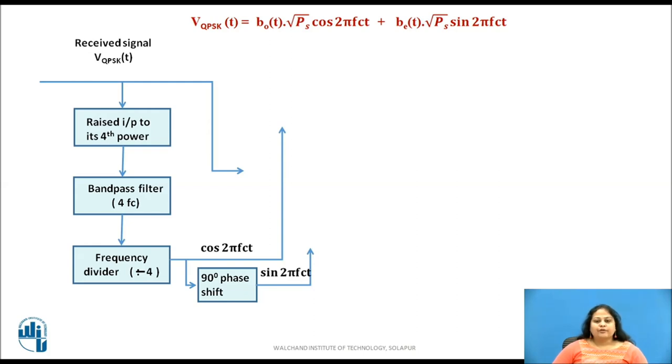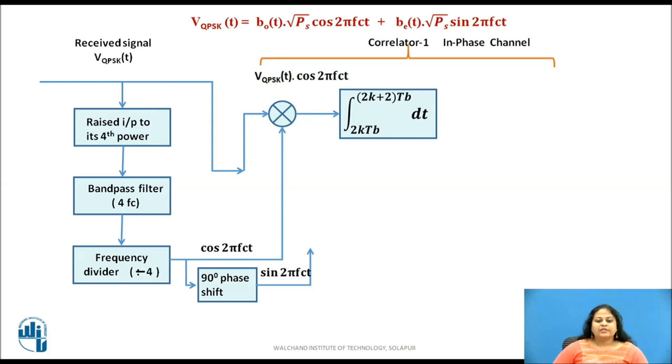We know that the received QPSK signal is the sum of product of pair of quadrature carriers with in phase signal BO of t and quadrature phase signal BE of t as shown. The coherent carrier cos of 2 pi fct and the received QPSK signal are applied to a multiplier of a correlator 1 whose output is integrated in an integrator over 2 bit interval 2 tb which is equal to one symbol duration. This integrator produces an output equal to BO of t tb root of ps which is dependent only on the in phase signal or odd bits stream BO of t and is independent of BE of t.